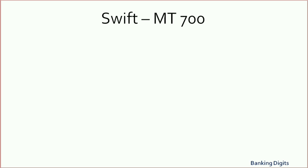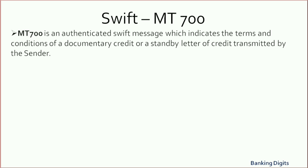First, let us know what is an MT700 message and its features. It is an authenticated SWIFT message which indicates the terms and conditions of a documentary credit or a standby letter of credit transmitted by the sender. As it states, it is by default an authenticated communication.